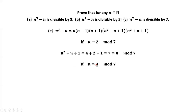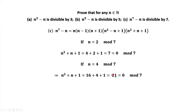When the remainder is 4, the remainder of N squared plus N plus 1 equals 16 plus 4 plus 1, which is 21. Since 21 is divisible by 7, when the remainder of N divided by 7 is 4, N to the power of 7 minus N is divisible by 7.